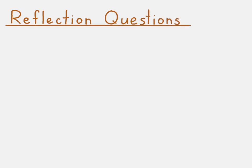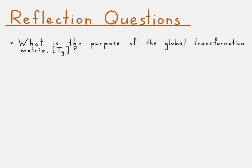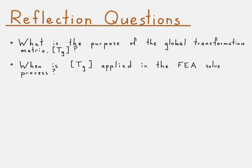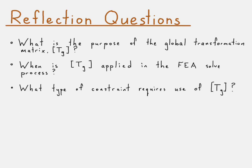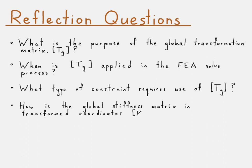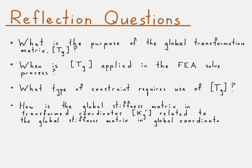That's our introduction to the global transformation matrix. Reflection questions: What is the purpose of the global transformation matrix? When is it applied in the finite element analysis solving process? What type of constraint requires its use? And how is the global stiffness matrix in the transformed coordinates related to the global stiffness matrix in global coordinates?